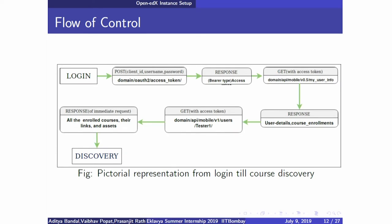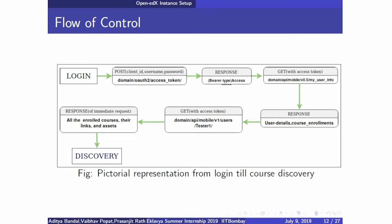This flow shows the communication between app and server for a specific user, containing a chain of requests and responses. User credentials are sent to the OAuth2 server, which verifies the user and provides a bearer access token. For any further request, this access token is attached to the header so the server does not need to verify the user again. A GET request is then made to domain/api/mobile/v0.5 with the access token, which responds with user details such as username.